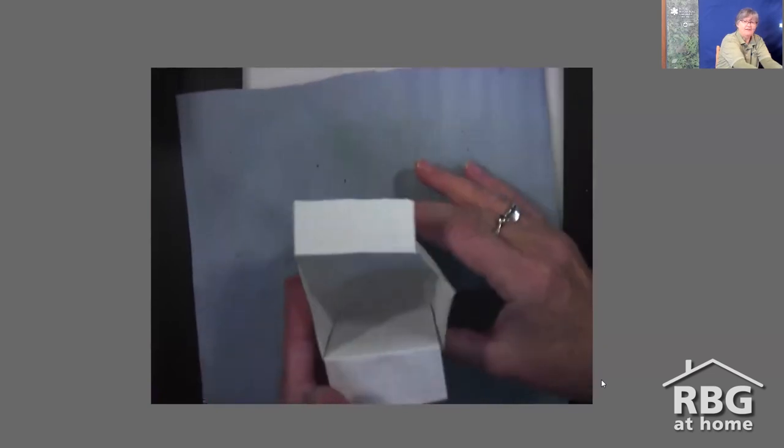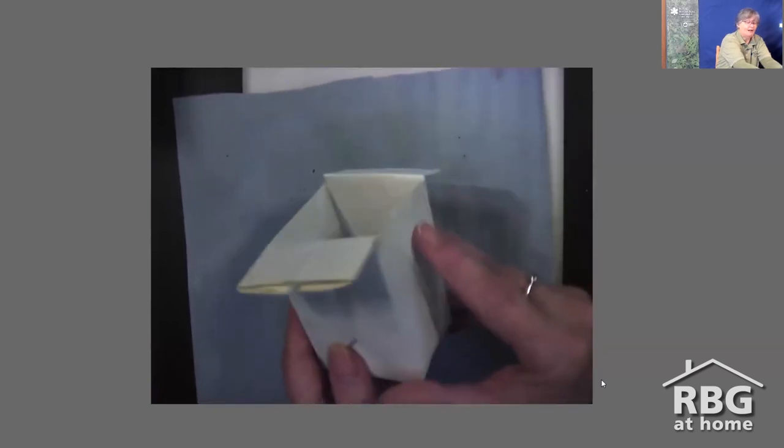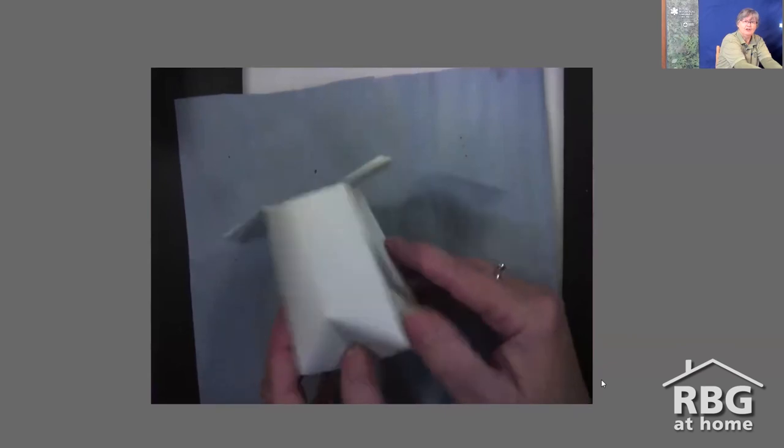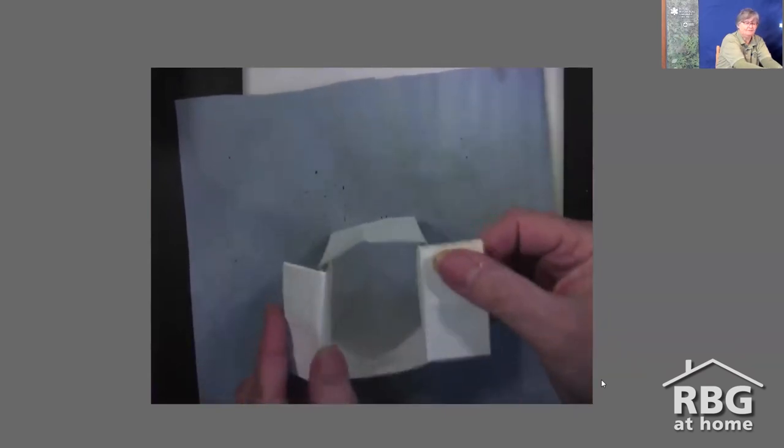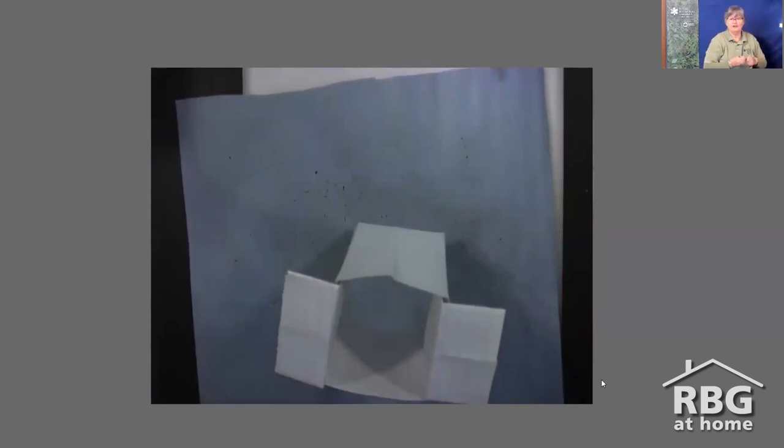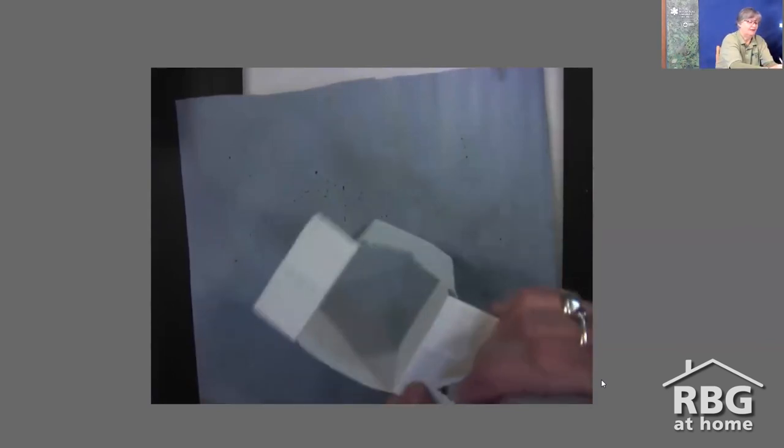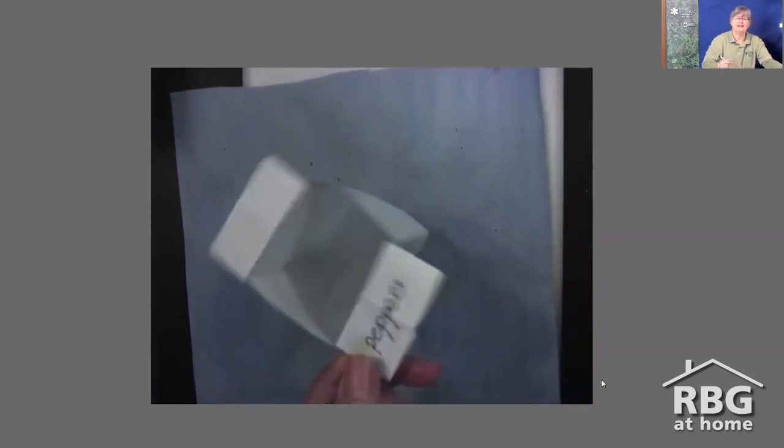You now have a little origami plant pot that you can use to start your tomato or pepper seeds in. What you might want to do is label your plant pot—maybe this is going to be peppers. There you go, there's your origami plant pot.